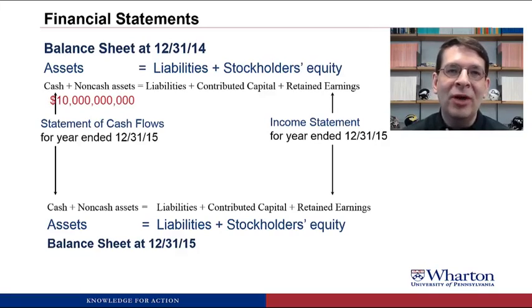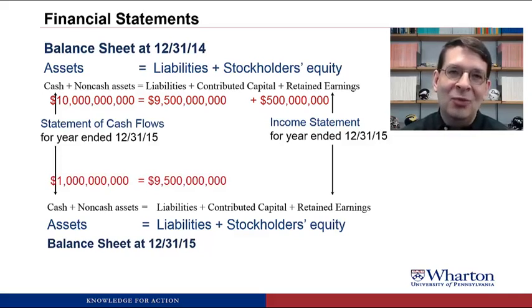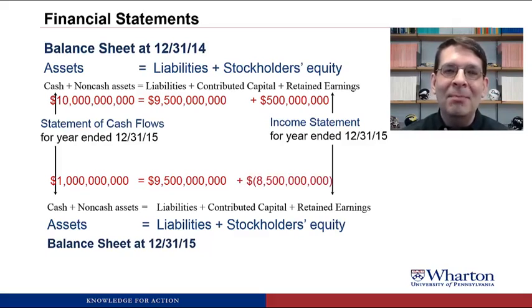During the financial crisis of 2007–2009, banks held assets called mortgage-backed securities — claims on cash payments from people who took out subprime mortgages. Say a bank had $10 billion of these as assets, $9.5 billion of liabilities, and half a billion of equity. When the financial crisis hit, homeowners stopped making mortgage payments, so these assets had to be written down from $10 billion to $1 billion. The liabilities don't change — that's why you need a government bailout — but equity drops by $9 billion. There's no cash flow impact, but the income statement shows a $9 billion loss.